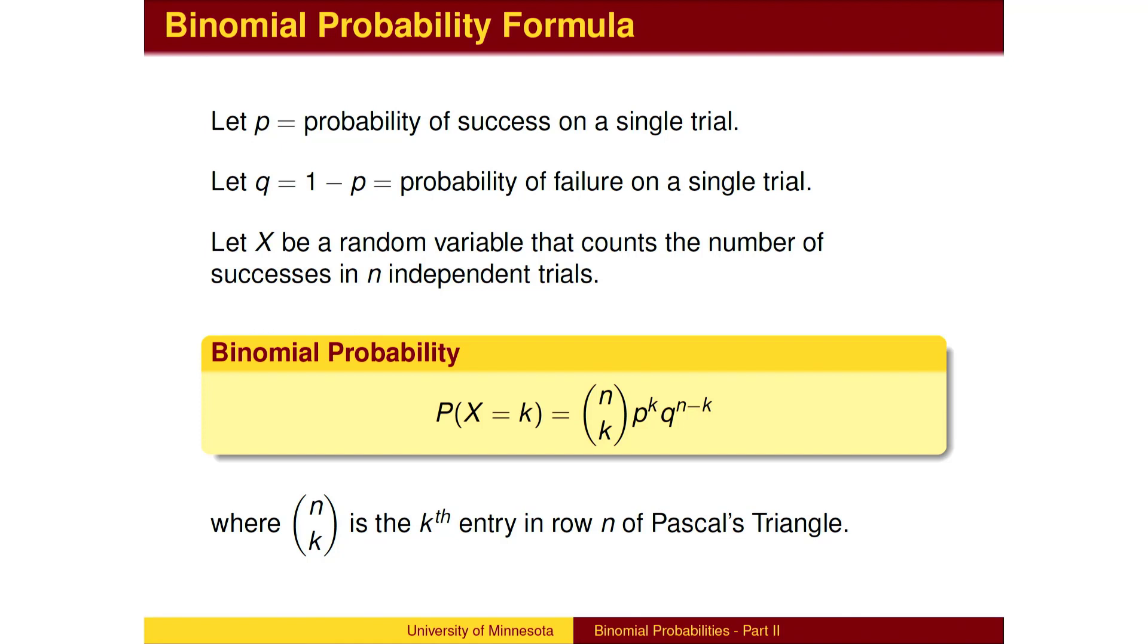In general, to compute the probability of getting k successes in n attempts, find the number of such strings from Pascal's triangle and multiply the probabilities associated with the successes and failures.